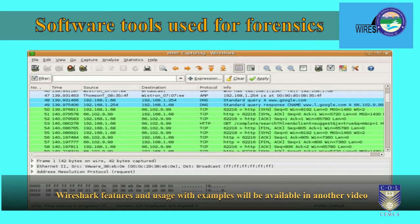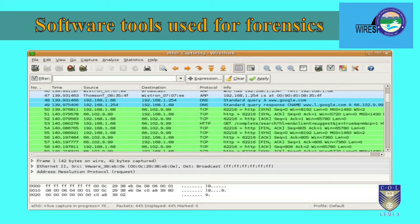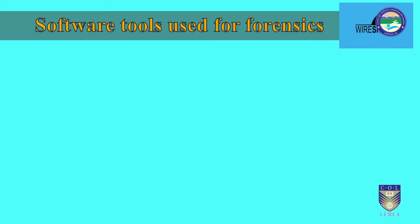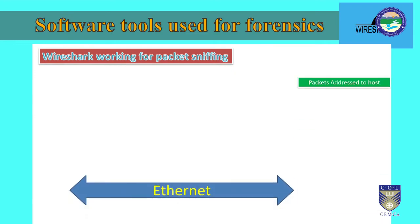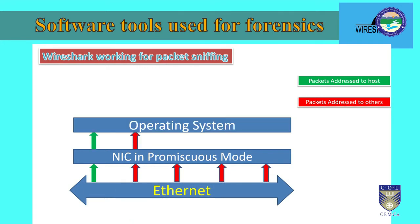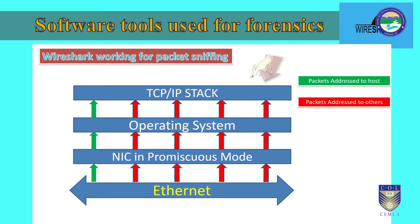Wireshark runs on Linux, OSX, BSD, Solaris, some other Unix-like operating systems, and Microsoft Windows. There is also a terminal-based non-GUI version called TShark. Wireshark and programs distributed with it are free software released under the GNU General Public License. Wireshark is very similar to TCPdump but has a graphical front-end plus some integrated sorting and filtering options. Wireshark lets the user put network interface controllers that support promiscuous mode into that mode so they can see all traffic visible on that interface, not just traffic addressed to one of the interface's configured addresses and broadcast or multicast traffic.